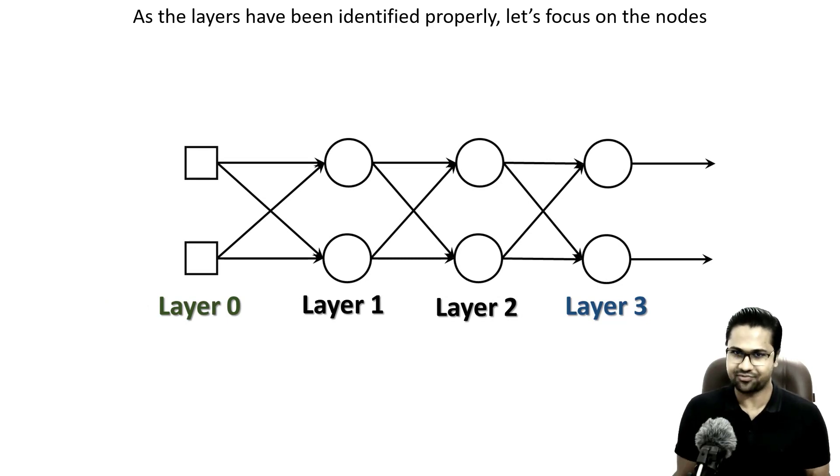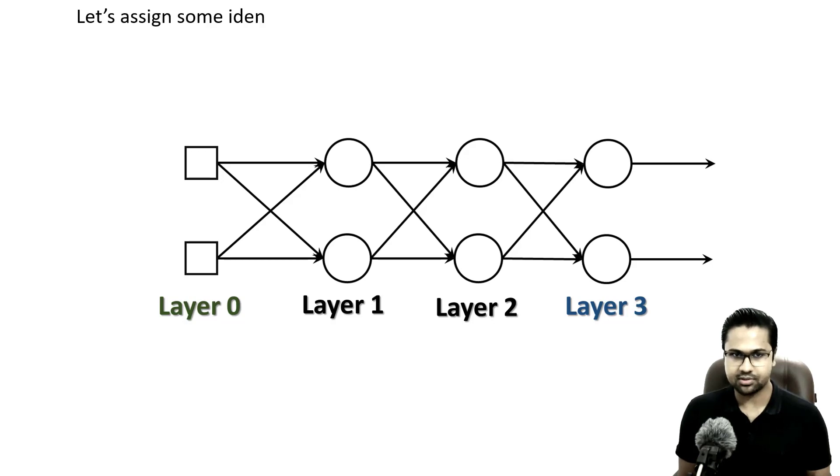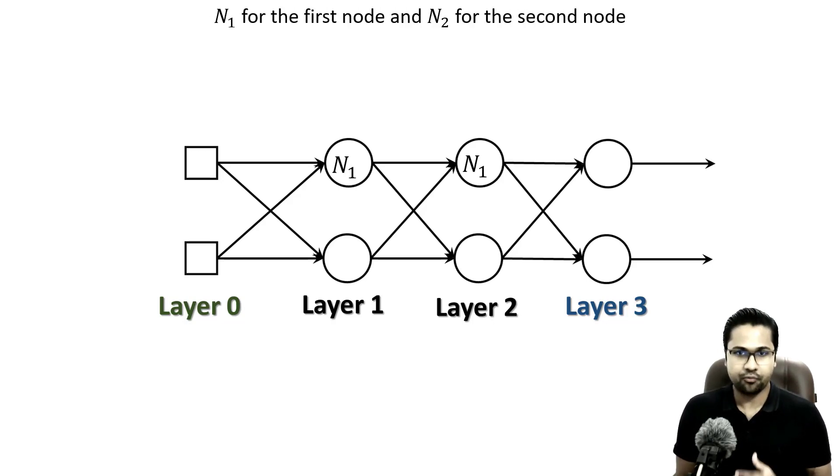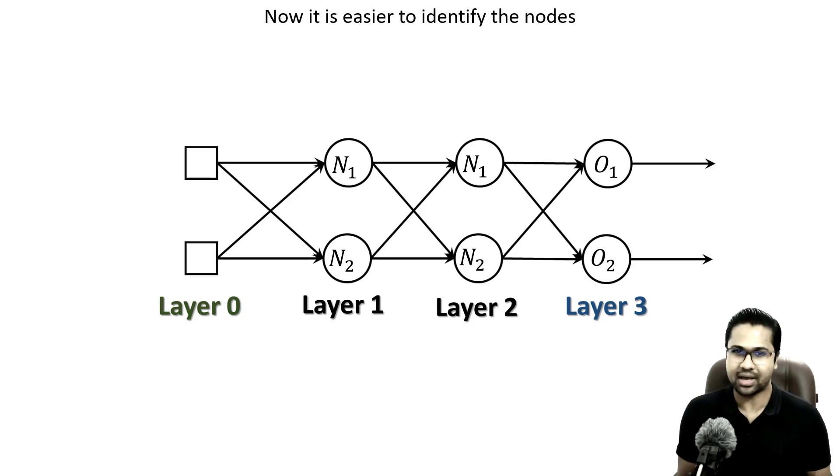As the layers have been identified properly, let's focus on the nodes. In our network, we have two nodes in each layer. If I ask you to select a node from the second layer, you will ask back the question, which node? Let's assign some identification marks to avoid these types of confusions. Let's denote hidden nodes with N and output nodes with O. N1 for first node, N2 for second node, O1 for first output node, O2 for second output node. Now it is easier to identify the nodes.